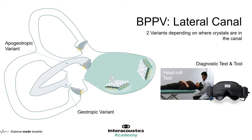Let's now talk about lateral canal BPPV. In order to diagnose this, you need the same equipment as you needed to diagnose both anterior and posterior canal BPPV — a VNG goggle with a cover which puts the patient in complete darkness. The test we use to diagnose lateral canal BPPV is different, however. Instead of the Dix-Hallpike, we do a head roll test, and you'll see an example of how this is administered later on.